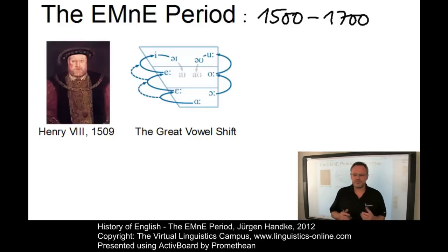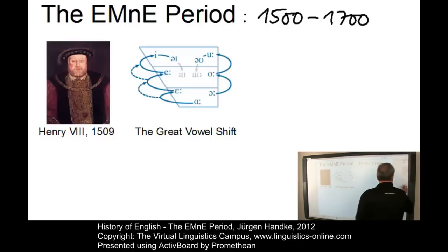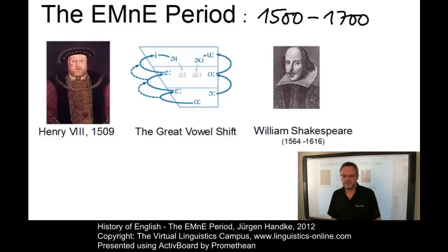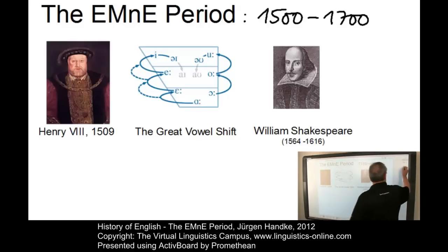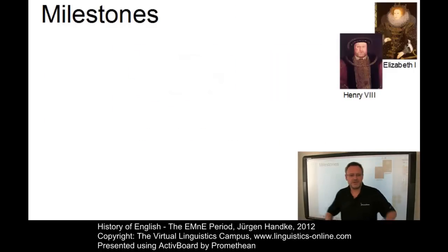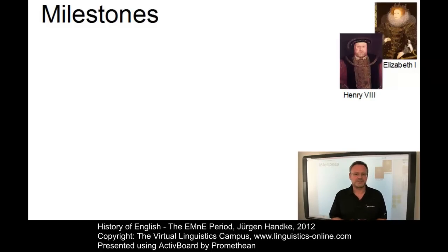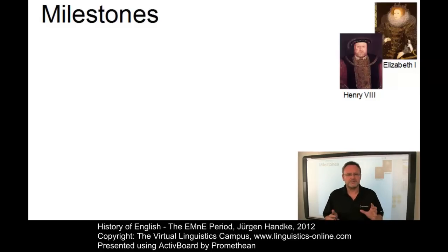Most influential with regard to early modern English were the works of William Shakespeare. For this reason, early modern English is often alternatively referred to as Shakespearean English. But there were further milestones that mark this period. Major changes in science and society gave the people of the early modern English period new perspectives that influenced their lives and thus their language. Among these, the following can be named as the most influential factors.